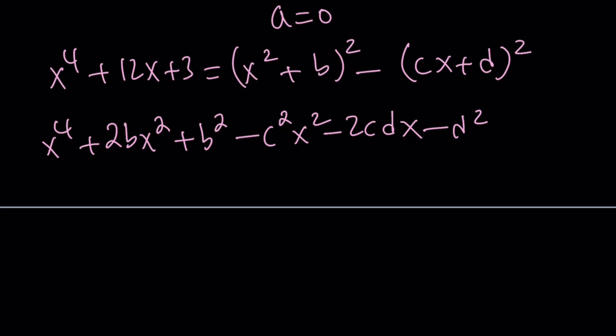We have x to the fourth power and then no x cubed as you can see here. We have 2b x squared minus c squared x squared, so that's 2b minus c squared as the coefficient of x squared. And then we have this term.